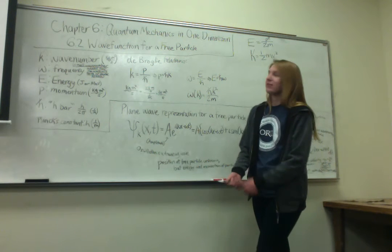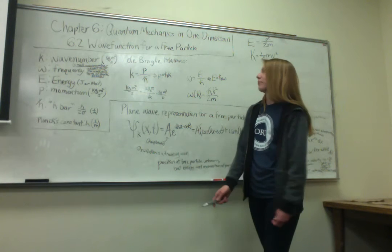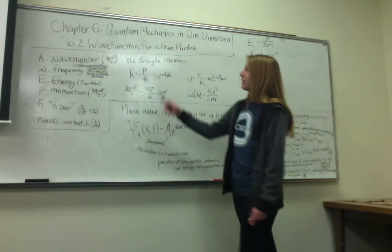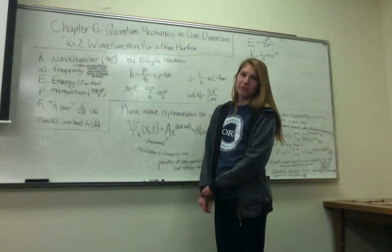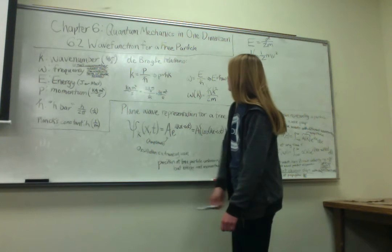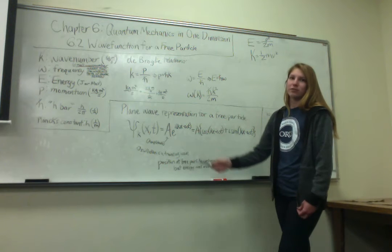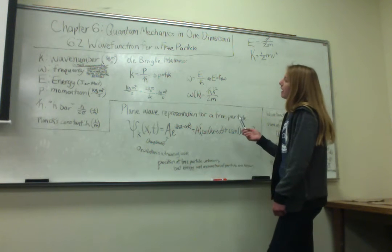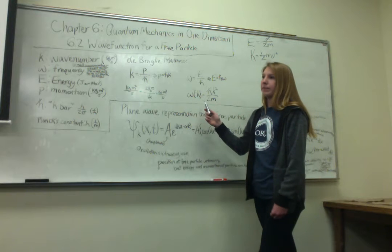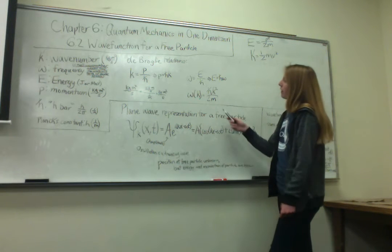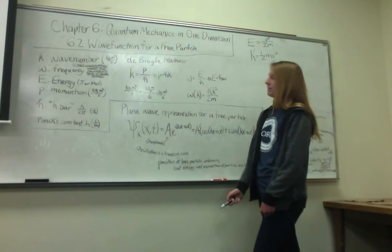And then there's some different de Broglie relations, which are really helpful. There's k, the wave number, equals momentum over h-bar. And then also, omega equals energy over h-bar. And there's also omega in terms of k, so you have h-bar k-squared over 2 times the mass.